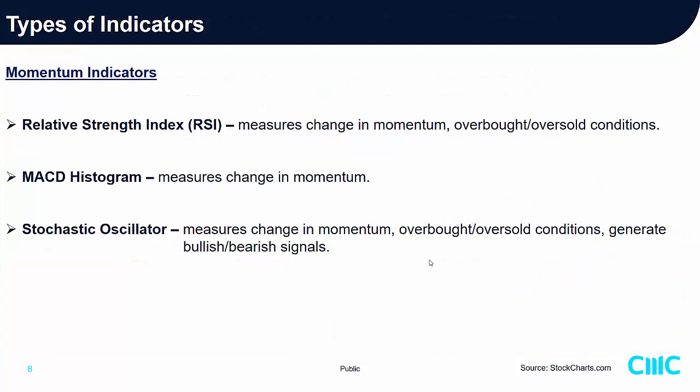Now, the next set of indicators — we call them momentum indicators. There are three commonly used momentum indicators I'd like to share. In the universe right now, there are close to more than 20 momentum indicators, but more or less they signal the same concept or trading behavior. The three popular ones are: Relative Strength Index (RSI), MACD histogram, and Stochastic Oscillator.